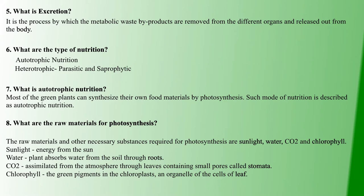Water is absorbed from the soil through the roots. Carbon dioxide enters through the leaves. Chlorophyll is the green pigment found in chloroplasts in the leaves. Using these inputs and sunlight energy, the plant performs photosynthesis to prepare its food.